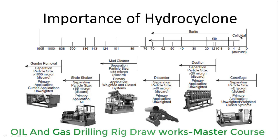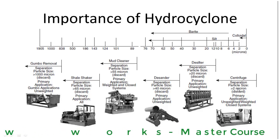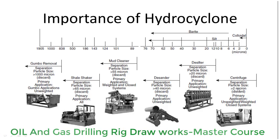Solid particles less than 2 microns in size are called colloidal solid particles and are almost impossible to remove from the drilling fluid. From this, we can see that if we don't use a mud cleaner or separately a desander and desilter, the silt particles from 20 to 65 or 75 microns will remain inside the system and go directly to the centrifuge. The centrifuge will then have a large load of solids and will not be capable of handling that concentration of solid particles inside the mud system.